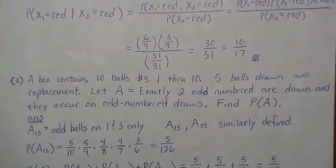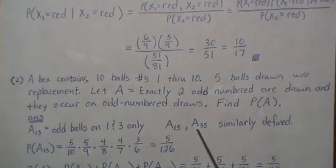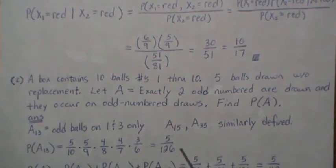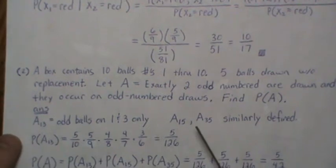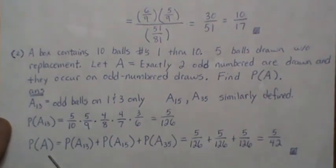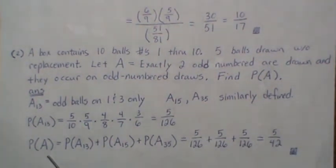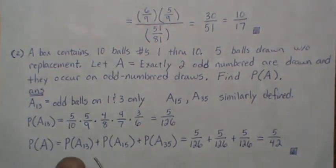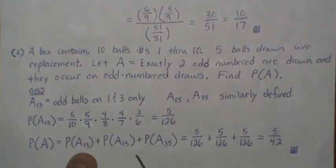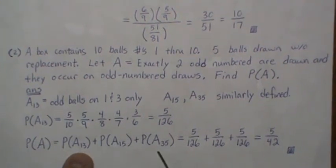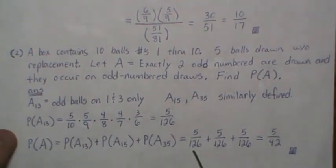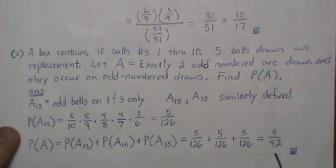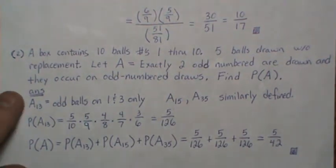It turns out that when we calculate these probabilities, they all end up being the same. So the probability of A — two odd balls drawn on odd-numbered draws — is the sum of these three events, each equal to 5/126, which gives 5 over 42.